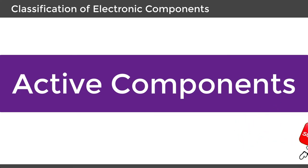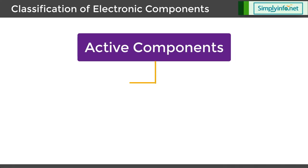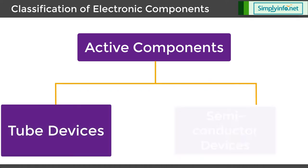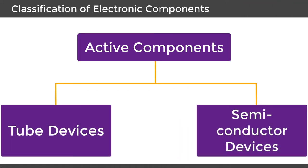Active components are used in electronic circuits. They are classified in two categories: tube devices and semiconductor devices.